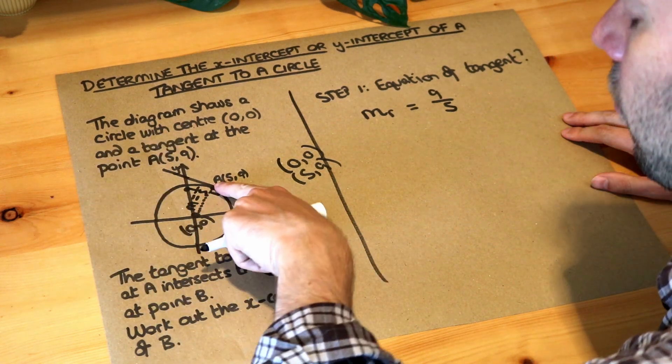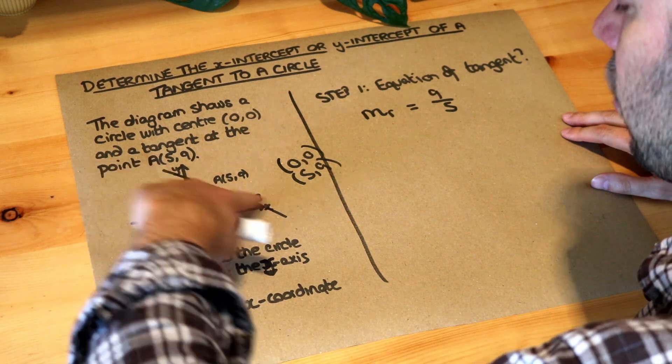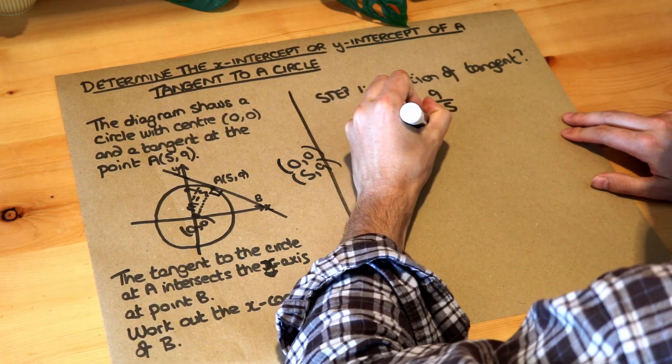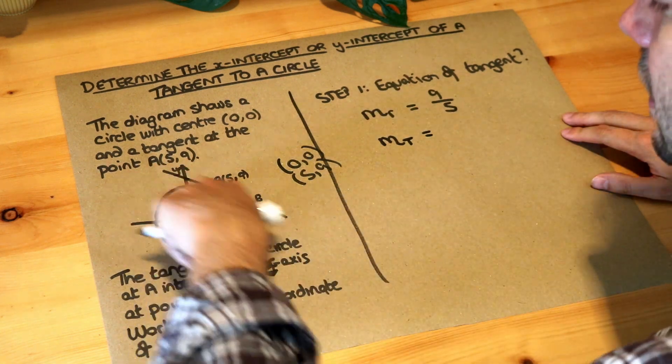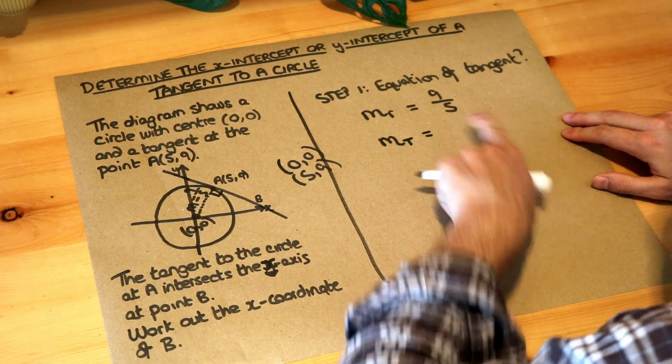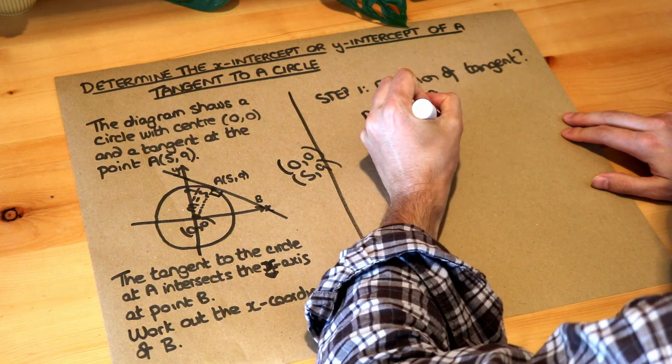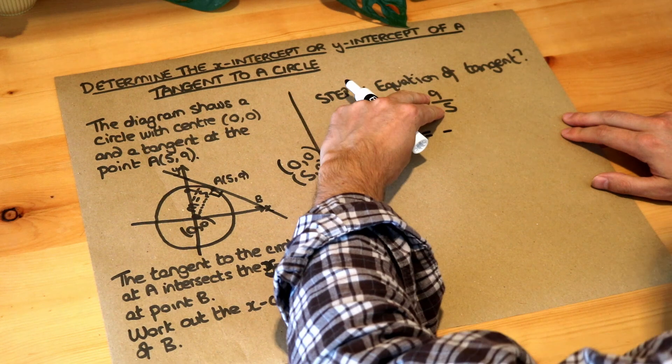And then do you remember, if we've got the gradient here, we want the gradient of the perpendicular line. So we want the gradient of the tangent. And the gradient of the tangent, to find the perpendicular gradient, we just do the negative reciprocal of this. So if it was positive, it's now negative. And we do the reciprocal of the fraction.